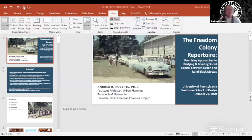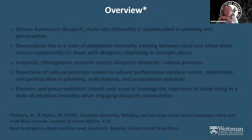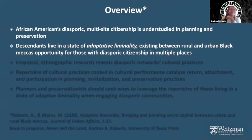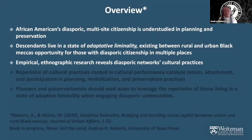Thanks again for having me, and I'm really excited to share this work with you today. I'd like to begin by going ahead and letting people know what it is I'm trying to get across tonight, rather than you wait for the end and wonder what the point is. So this is what I intend to show you: that African Americans' diasporic multi-site citizenship is understudied in planning and preservation, and that descendant communities live in a state of adaptive liminality — meaning existing between rural and urban Black Meccas of opportunity.